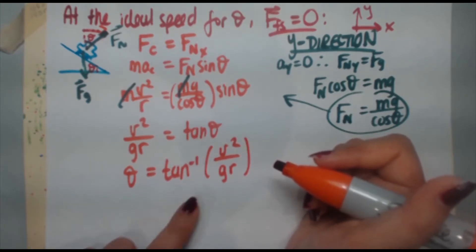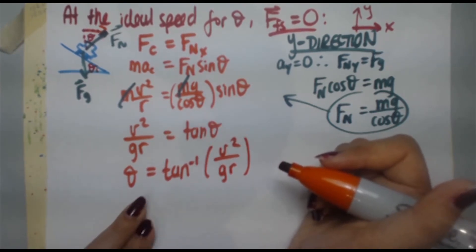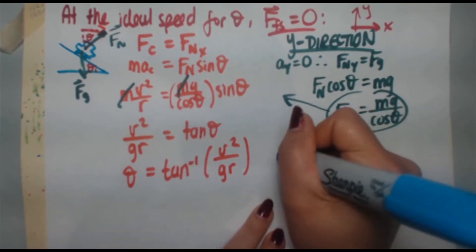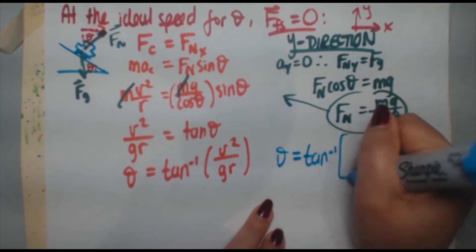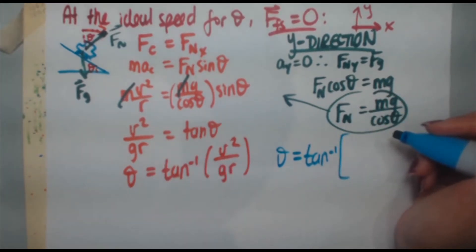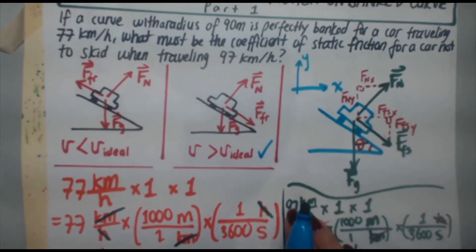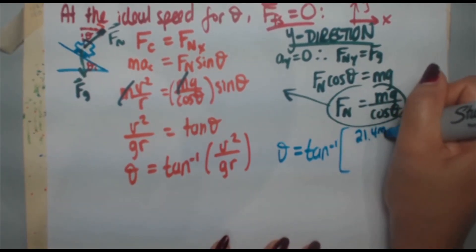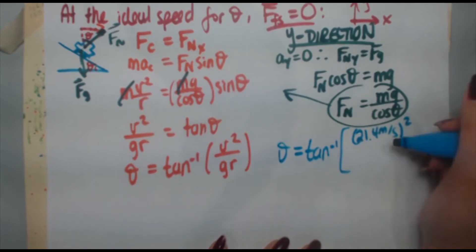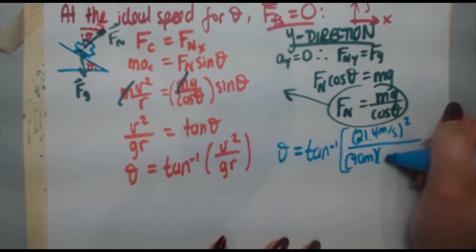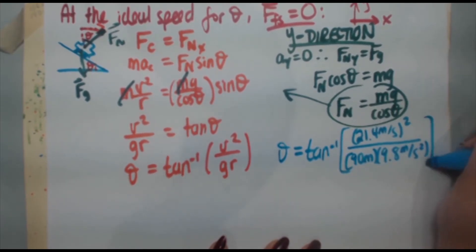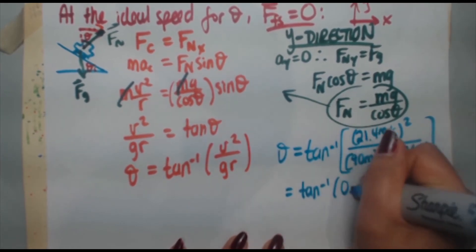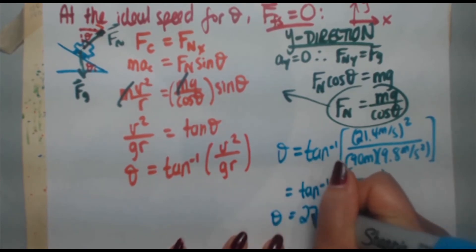That is the formula for the perfect banking angle. Make sure you understand where it comes from and are comfortable deriving it. Applying it to this problem: θ = arctan(v²/gr), where v = 21.4 m/s (the ideal speed), r = 90 m, and g = 9.8 m/s². The argument is 21.4² / (90 × 9.8) = 0.519, so θ = arctan(0.519) = 27.4 degrees.